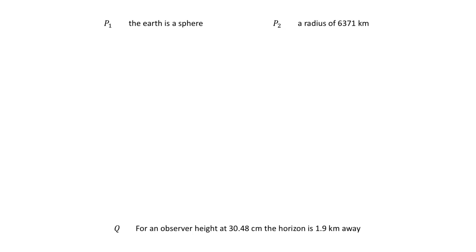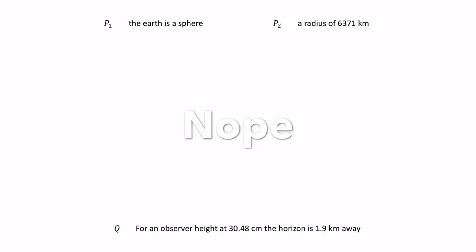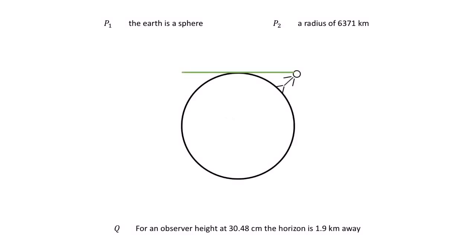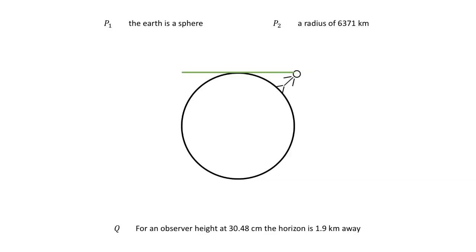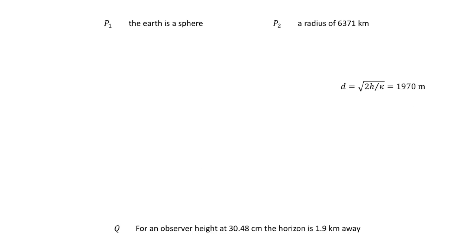The geometric horizon is the visible boundary. At any point along the line one can draw another line between that point and the observer. From the small angle approximation we can use the 8 inches per mile squared formula. We plug in the numbers and get 1.9 kilometers. If the observation is inconsistent with the logical conclusion, then either P1 or P2 is incorrect, or both P1 and P2 are incorrect, or the statement is incomplete.